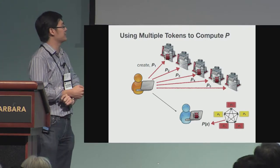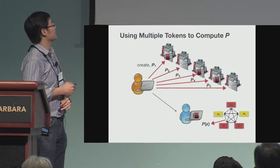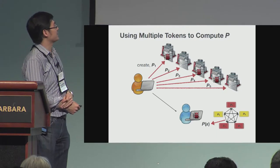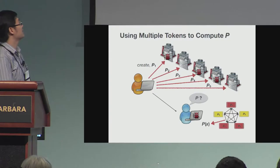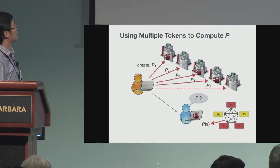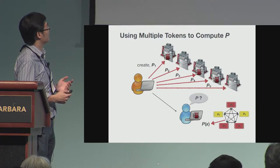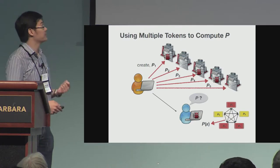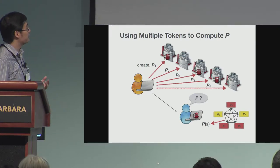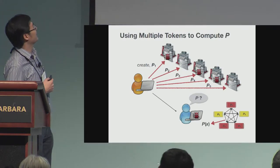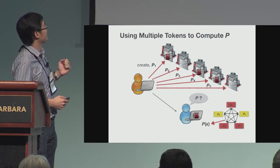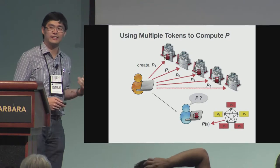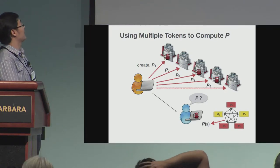It's also possible that the receiver is corrupt and colluding with a corrupted manufacturer. In this case, we still want to guarantee that P is hidden. Essentially, we want to guarantee that if at least one manufacturer is honest, then the adversary cannot learn anything about P. If all of them are corrupt, then the adversary can learn all the descriptions and compute P.